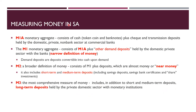Now let's focus on measuring money in South Africa. In the context of South Africa, we have M1A, M1, M2, and M3 — all forms of measuring money supply or money stock. M1A is the monetary aggregate consisting of cash (token coin and banknotes), which is currency in circulation, plus check and transmission deposits held by the domestic private non-bank sector at commercial banks. M1, which is the narrow definition of money, consists of M1A plus other demand deposits held by the domestic private sector with banks.